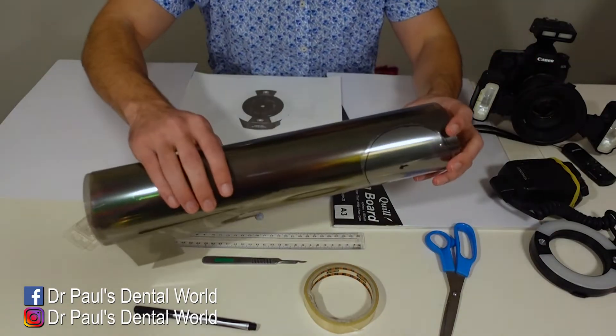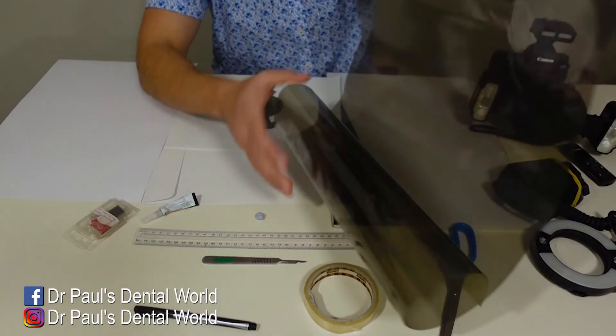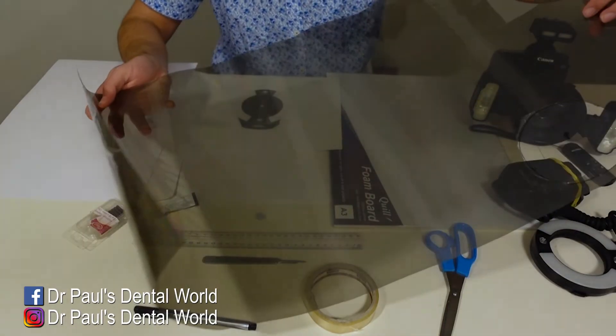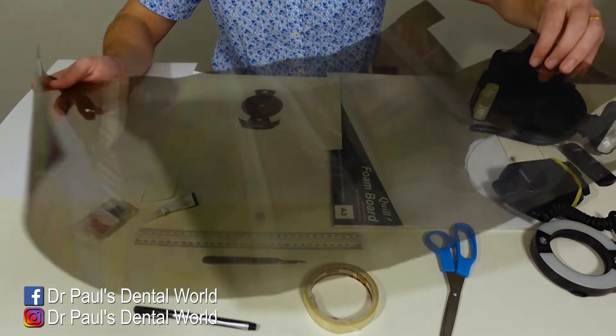Then we also have the polarized sheet. So that sheet it has to be a piece that's really big so you've got enough and you also have to make sure that it is linear.